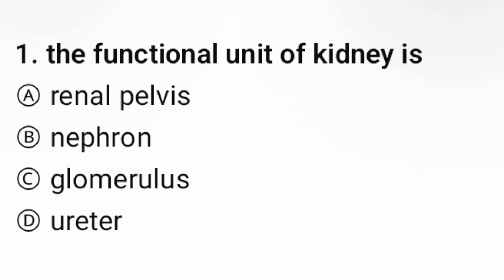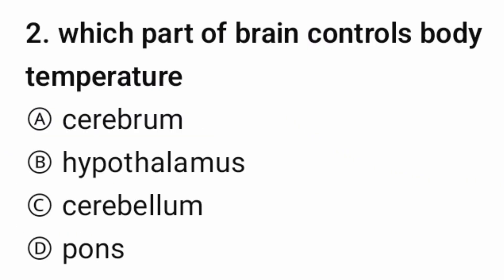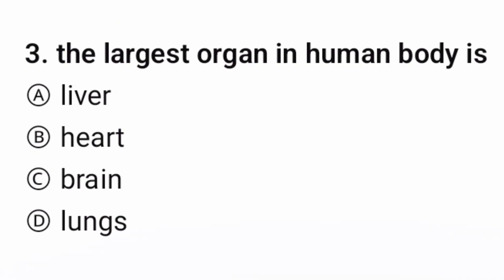Question 1: The functional unit of kidney is — the correct option is B (nephron). Question 2: Which part of the brain controls body temperature? The correct option is B. Question 3: The largest organ in the human body is — the correct option is A (liver).